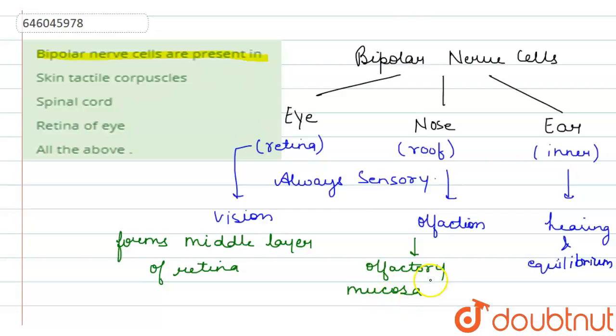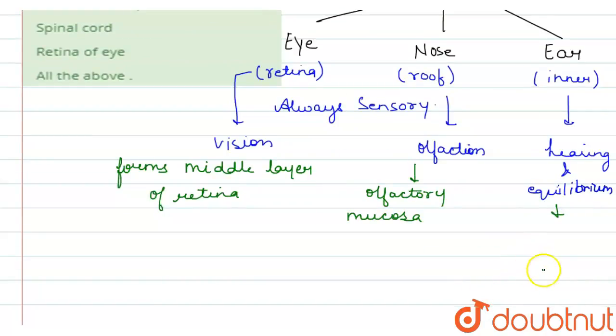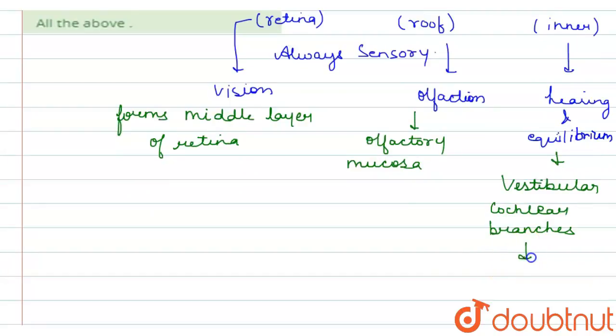For ear, it is found or it makes up the vestibular cochlear branches. And these vestibular cochlear branches are of what? They are of the vestibulocochlear nerves.